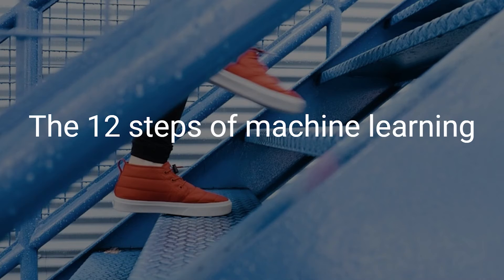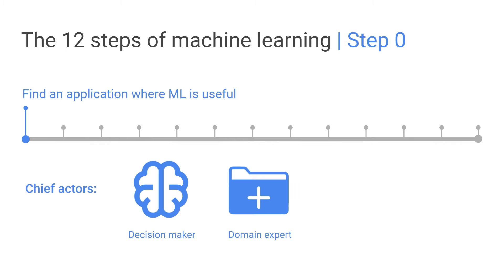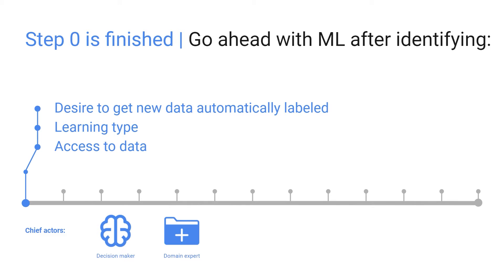Let's do a quick review of what we've learned. The 12 steps always start at step 0: figure out whether machine learning is actually what you need and find a good application for it. There you're thinking about what labels or outputs you actually want from your system.